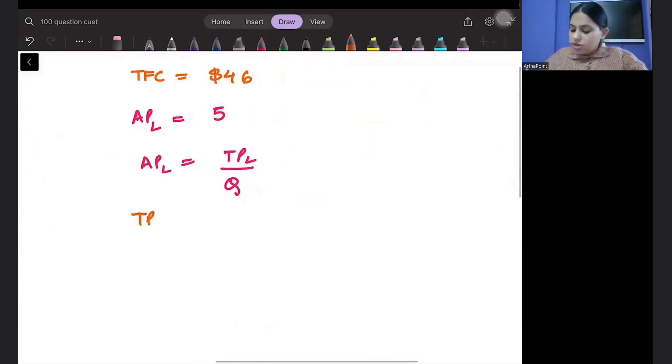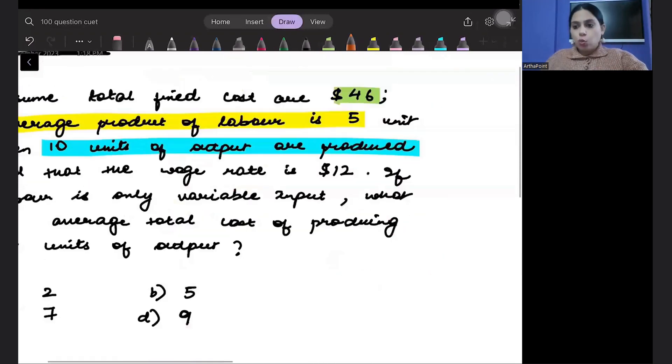How much is our total product? 10. So what can I do here? Let me just find it quickly right now. So 5 equals 10 by Q. So Q equals 10 by 5, it means 2. So I have got Q as 2.